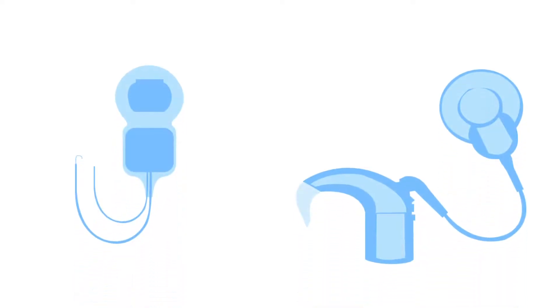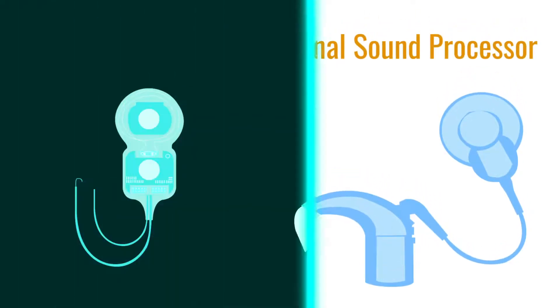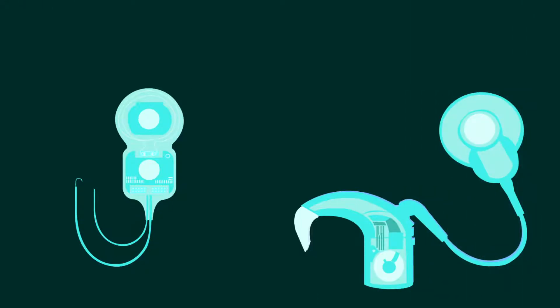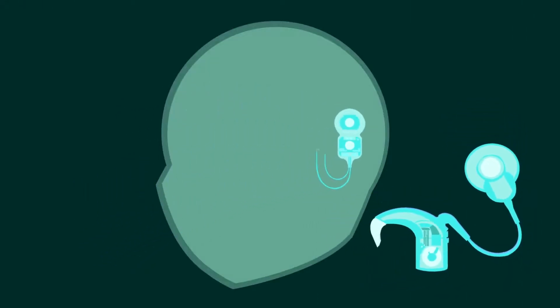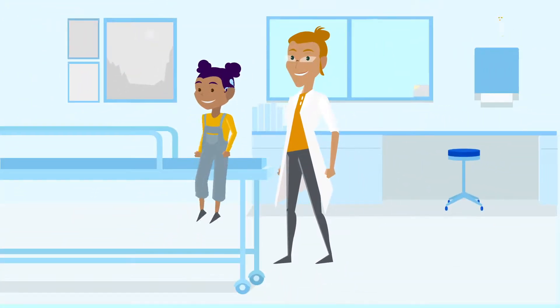Cochlear implants give individuals with hearing loss the ability to perceive sound. The device includes an internal implant and an external sound processor. XRM scans allow manufacturers of implants to maintain a high level of quality control of the complex internal circuitry, reducing the chance of defective components and ensuring positive patient outcomes.